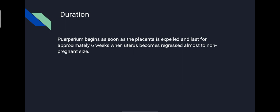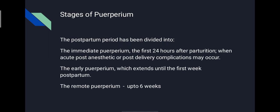The postpartum period has been divided into three stages: the immediate puerperium, up to 24 hours, when acute post-anesthetic and post-delivery complications may occur; the early puerperium, which extends up to the first week postpartum; and the remote puerperium, up to 6 weeks, during which genital involution occurs.